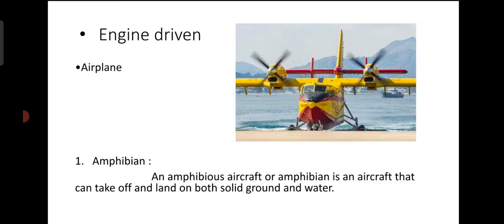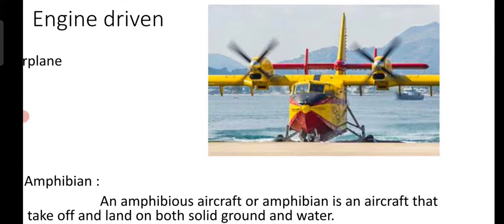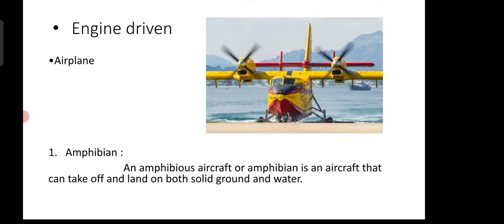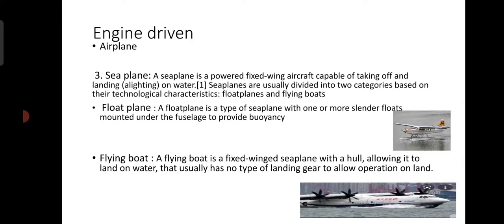In engine driven aircraft, the first airplane type is amphibian. An amphibious aircraft or amphibian is an aircraft that can take off and land on both solid ground and water. As seen in the image, it has a landing gear with wheels so it can land and take off from land, and it also has floats that help it land and take off from water. The second type is land plane — this type of airplane lands and takes off from a runway. All commercial planes are land planes.